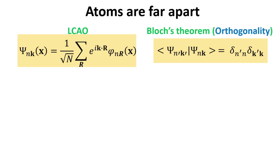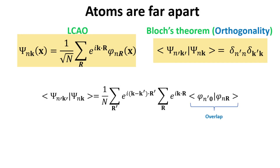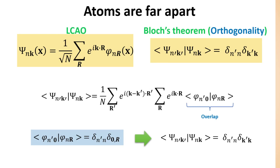The orthogonality condition of Bloch states is highlighted in the yellow box to the right. Replacing the Bloch states as a linear combination of atomic orbitals in the orthogonality relation, we find the following. Note that the expression depends on the overlap between atomic orbitals in distinct unit cells separated by a lattice vector R. Because the atomic orbitals are localized around each atom and the distance between the atoms is enormous in the initial system, the overlap between orbitals in neighboring atoms is negligible. At the same time, the overlap between distinct orbitals within the same unit cell is also zero. Therefore, we obtain the result that the Bloch states constructed as linear combinations of atomic orbitals with the particular coefficients we found already satisfy the orthogonality condition of Bloch states.